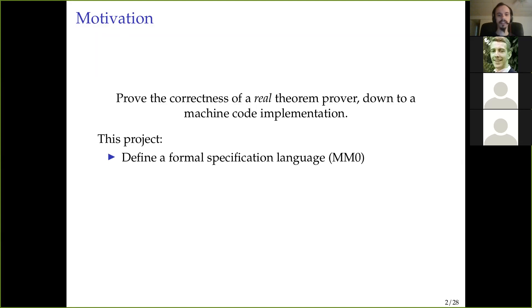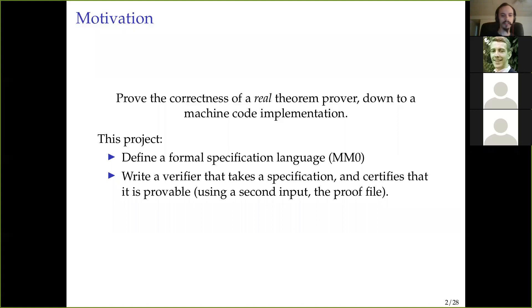This project, more specifically, is going to define a formal specification, which is called Metamath Zero, to write a verifier that takes a specification and certifies that it's provable using an auxiliary input, which is this proof file. And then we prove the correctness of the verifier.